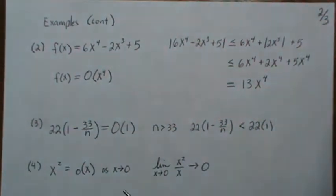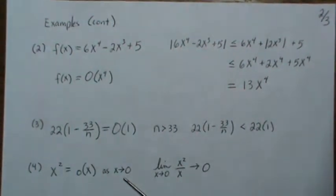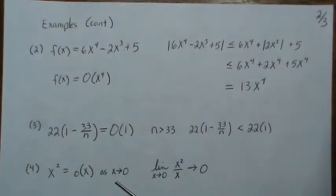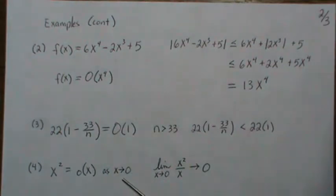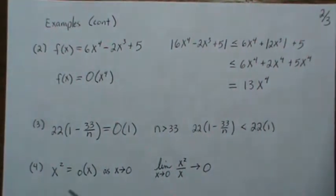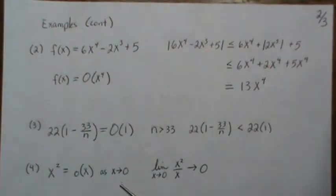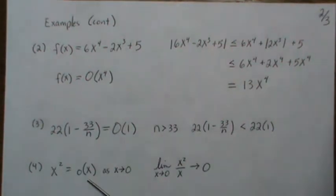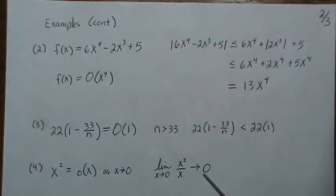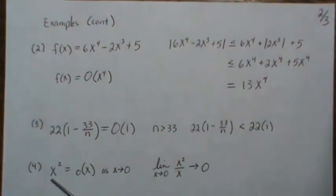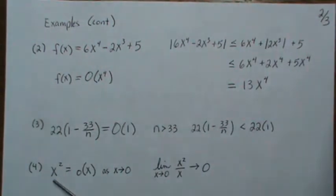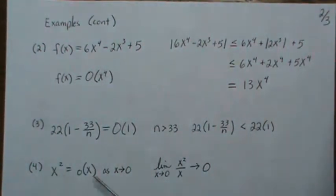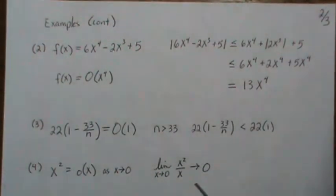Now we're going to switch from thinking about x going to infinity. You have to understand what x is going to — whether it's infinity or 0. A lot of people leave this off, but if it's unclear, you have to state it. So here, x² is little o of x as x goes to 0. You can show that by this ratio: you take x² on top and x on the bottom, they cancel, leaving x, and x goes to 0. That says x dominates x², which makes sense because when values are less than 1, taking a power makes them even smaller.